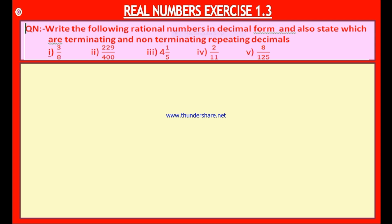The first bit is 3 by 8, the second bit is 229 by 400, third bit is 4 and 1 by 5, fourth bit is 2 divided by 11, and fifth bit is 8 by 125.